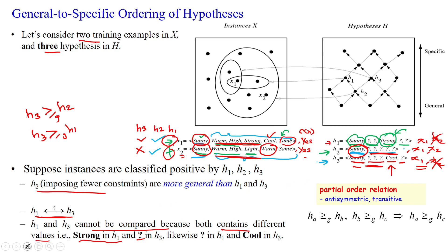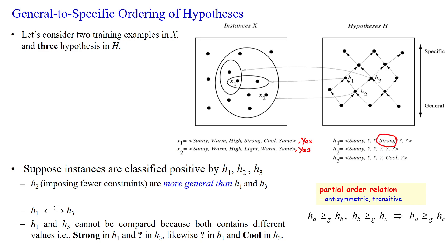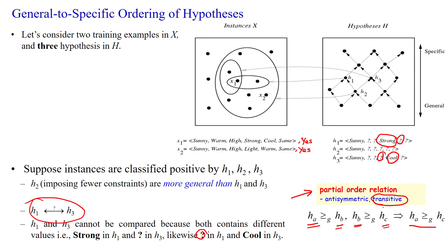In H1 we have strong, while in H3 we have a quotient symbol. And in H3 at the fifth attribute position we have a quotient symbol, but in H1 it is cool. So we cannot compare H1 and H3 for the more-general-than relationship. Another ordering relation we state here: if hypothesis A is more general than hypothesis B, and hypothesis B is more general than hypothesis C, then we can say A is more general than C — this is a transitive relation. However, it is anti-symmetric: we cannot say HB is more general than HA. This kind of relation is called a partial order relation.